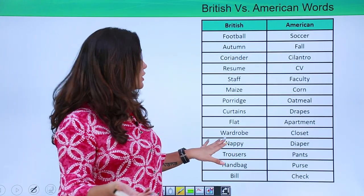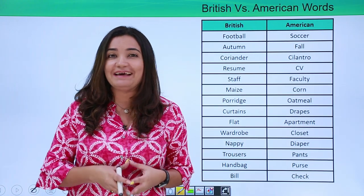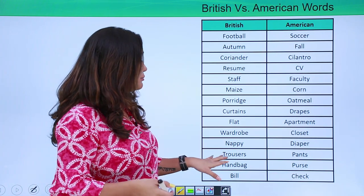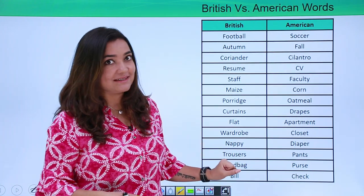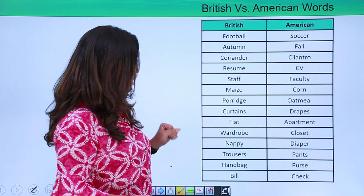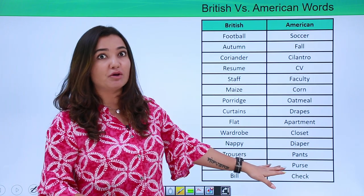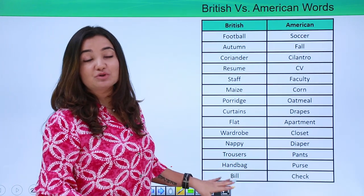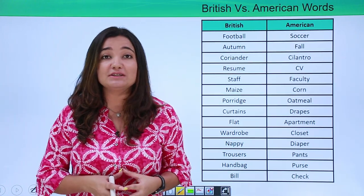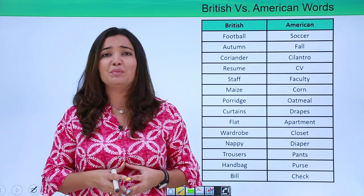A British person would call it a nappy whereas an American would call it a diaper — very important to know so you don't get confused while shopping. A British person would call it trousers whereas an American would call it pants. A British person would call it a handbag whereas an American would call it a purse. And last but not least, a British person would call it a bill whereas an American would call it a check — a small but impactful difference to learn.